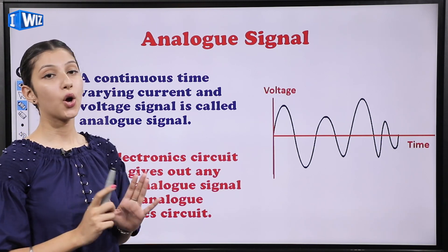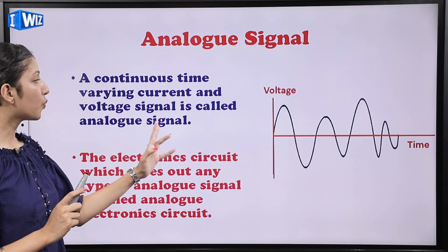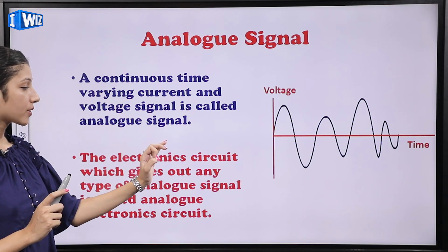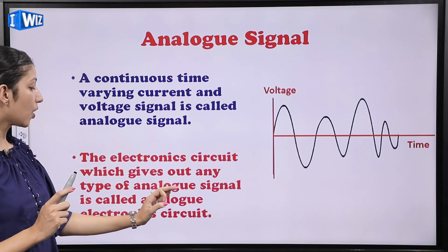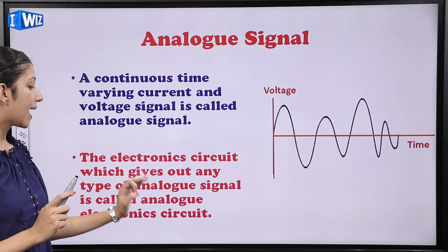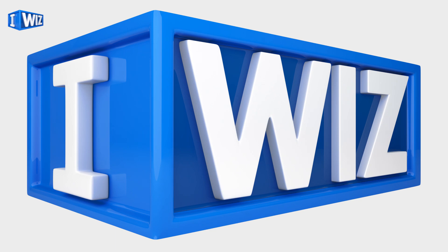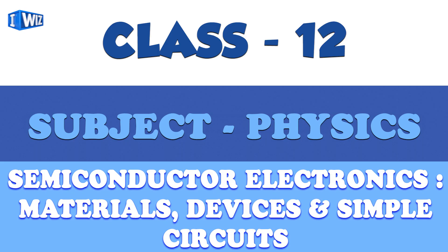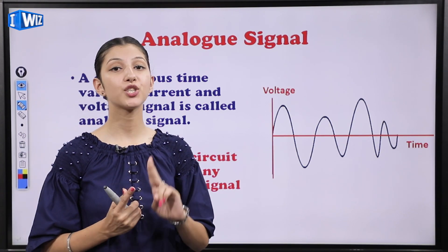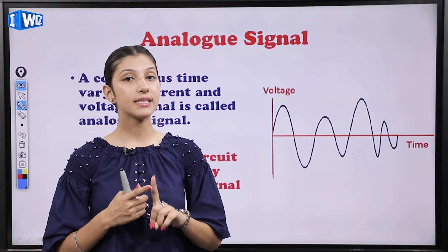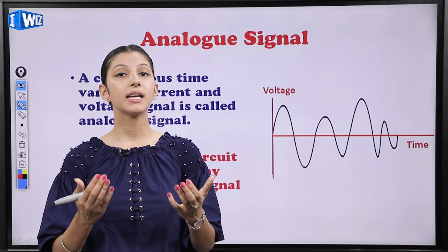Starting with the analog signal. A continuous time-varying current and voltage signal is called an analog signal. The electronic circuits which give out any type of analog signal are called analog electronic circuits. There are two types of signals — analog signal and digital signal.